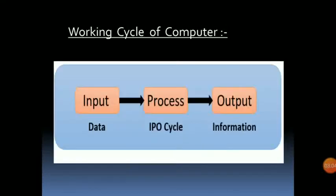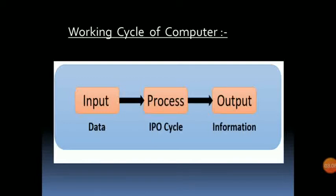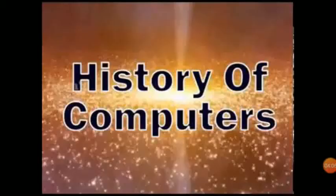Next is the working cycle of a computer: Input, Process, Output — also called the IPO cycle. Input: we input data by the help of input devices such as keyboard and mouse. Process: the CPU processes the data given by the user. Output: after processing, it gives the result to the output device — examples are monitor, speaker, and printer.